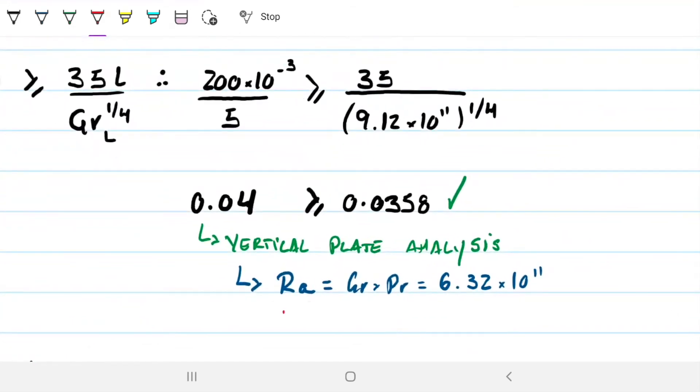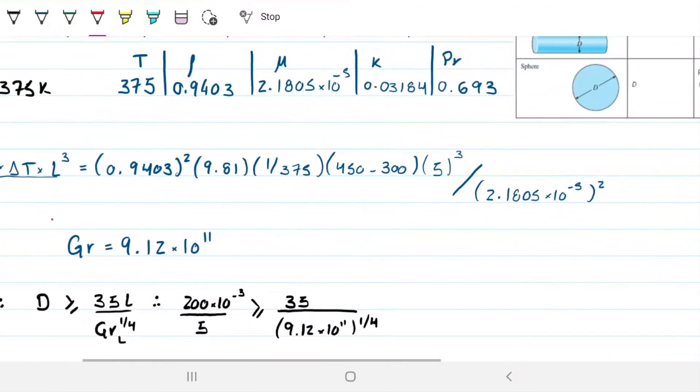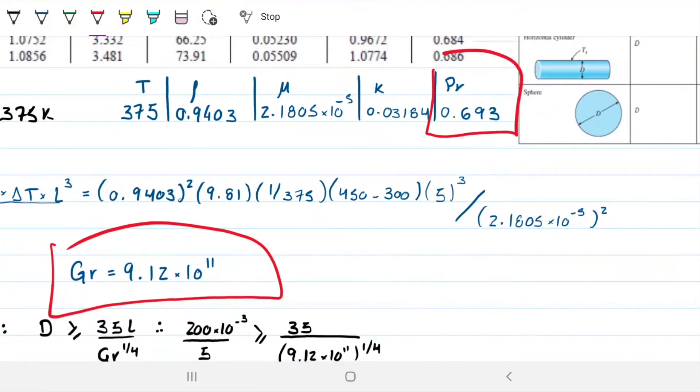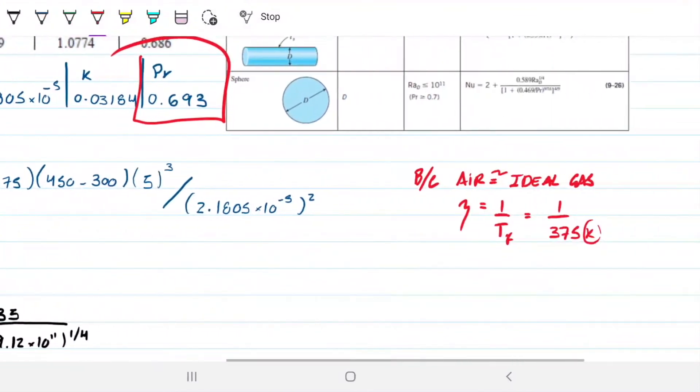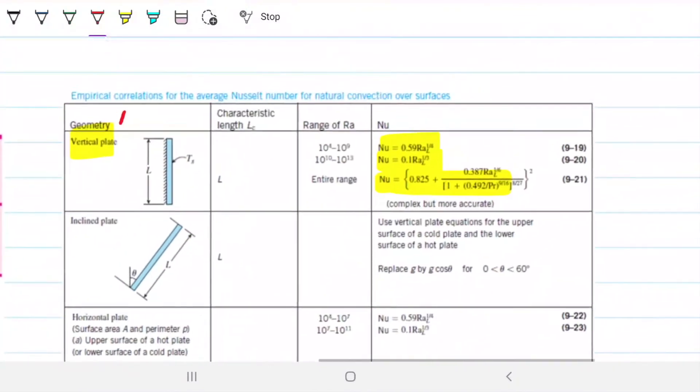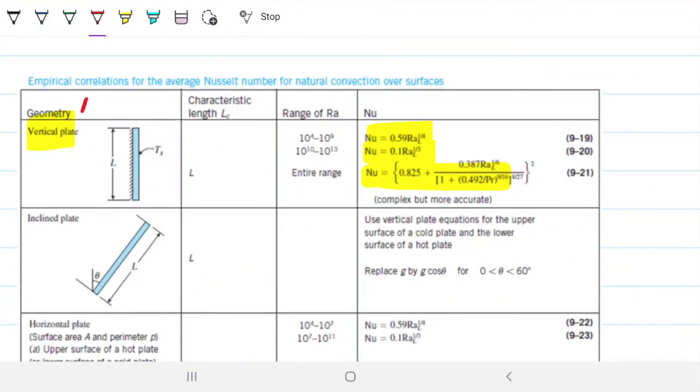So in this case, diameter, what I did is I just divided by the length, so I did diameter divided by length to have the ratio. So diameter is in meters, it's going to be 200 times 10 to the minus 3 because it's in mm, and then 5 is already in meters, just leave it that way. And over here, I'm going to have 35, the constant, divided by Grashoff to the one-fourth. Again, Grashoff, subscript L, for the height.